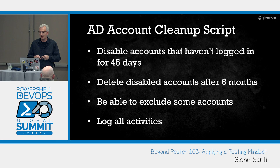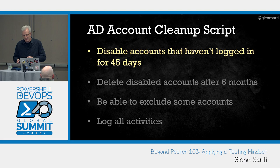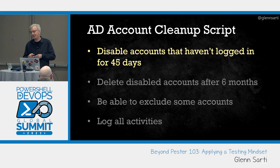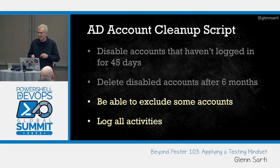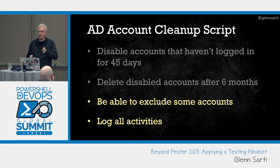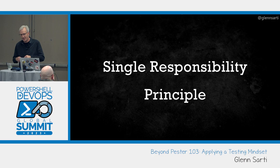So how can we make it more testable? Well, the first thing is you don't write any code. We have to look at what it's supposed to be doing and think how we could test those individual pieces. For disabling old accounts, the tests would be: if an account last logged in 46 days ago, it should be disabled; 45 days ago, it shouldn't be disabled. For deleting accounts: if it's six months ago it should stay disabled; six months and one day ago it should be deleted. Accounts in the exemption list shouldn't be disabled or deleted. And if we do anything, we should log it to the file. So now we can make our PowerShell prove that those tests work.